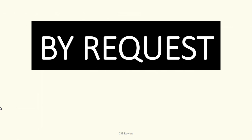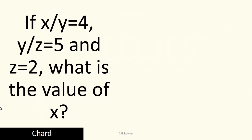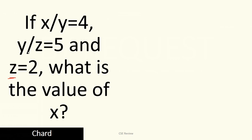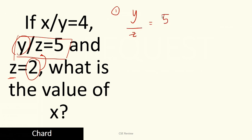All right, this is a new buyer request video. The first question we're going to answer: if x over y is equal to 4, y over z is equal to 5, and z is equal to 2, what is the value of x? This is basically a multiple variable problem. We need to find x, but only z is given. The technique here is to reverse — given the information, find x through the equations. You can solve for y since z is already given.